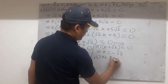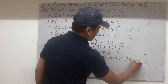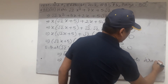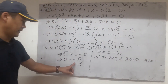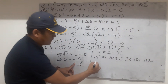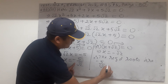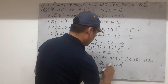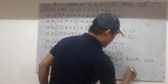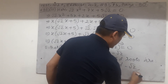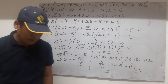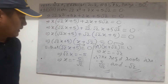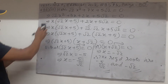Therefore the required roots are x equals minus 5 by root 2 and x equals minus root 2. Matching the textbook answer. There are two more questions — four and five — let us do those.